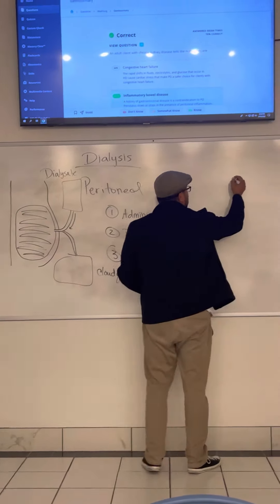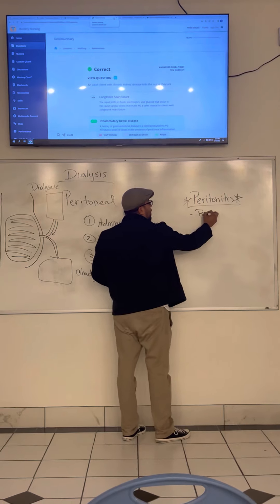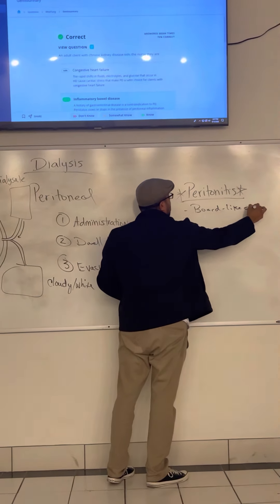For the first week when they install that catheter, there may be a little leakage. That's okay. But after a week, there should be no more leakage and you want to report that. You want to observe for any indications of peritonitis, which is a hard, board-like abdomen.